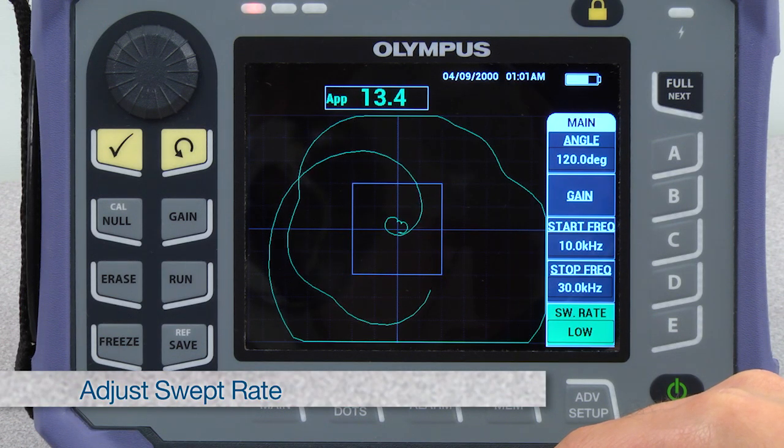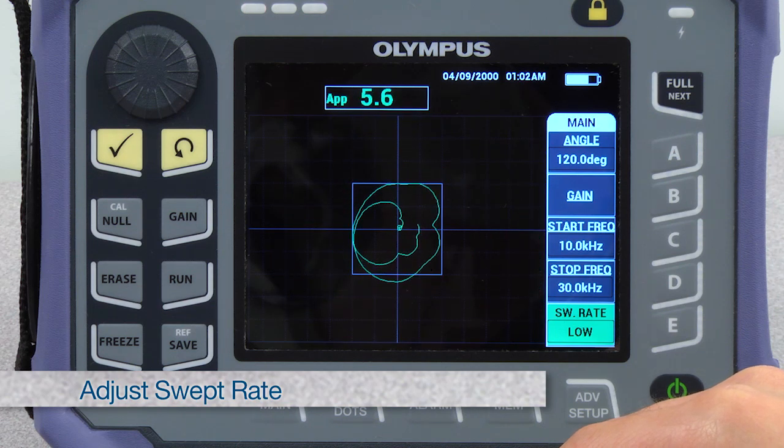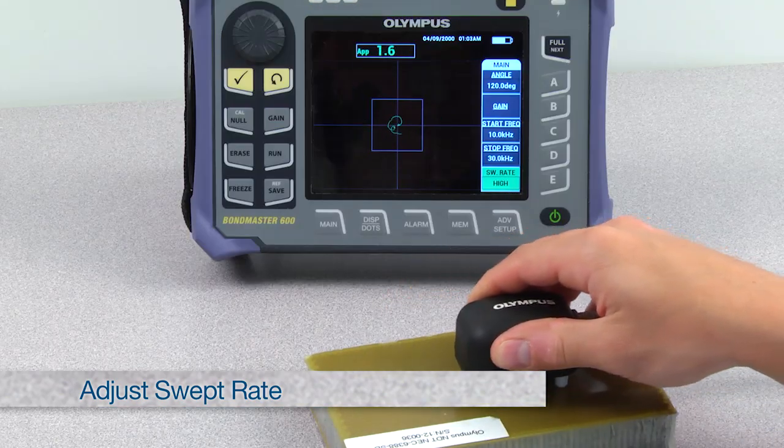A lower swept rate will provide better quality signals, while a faster swept rate will allow faster scanning.